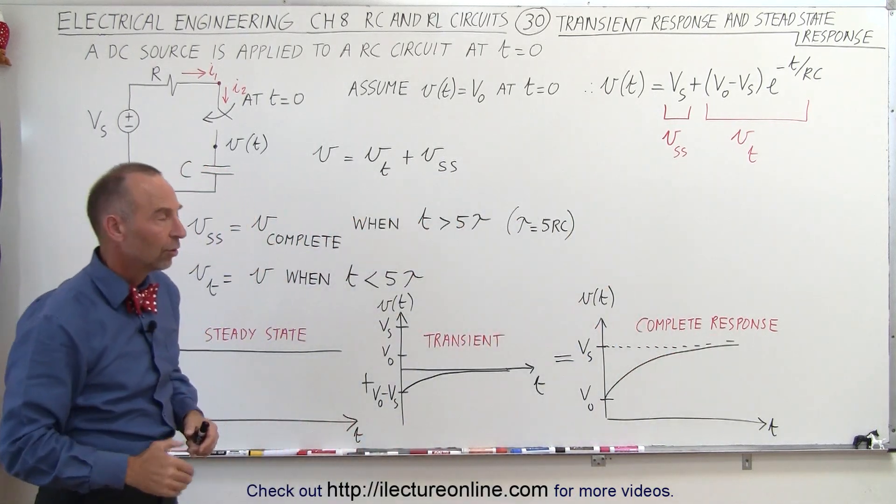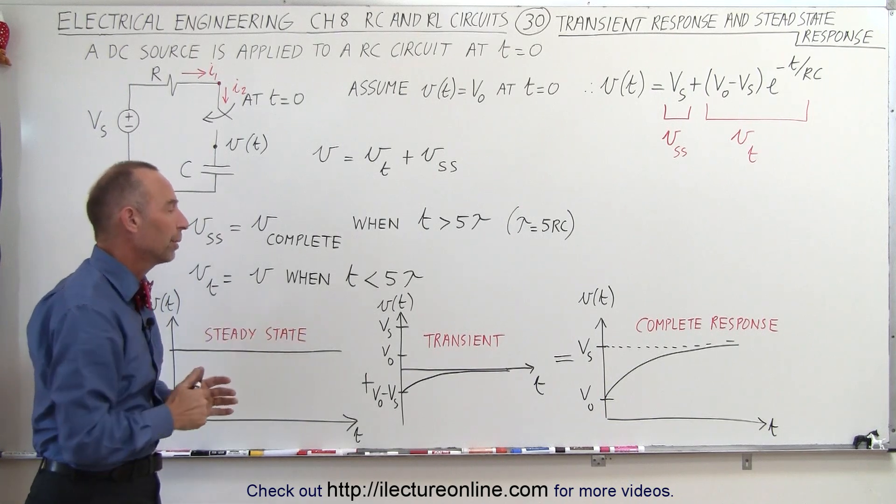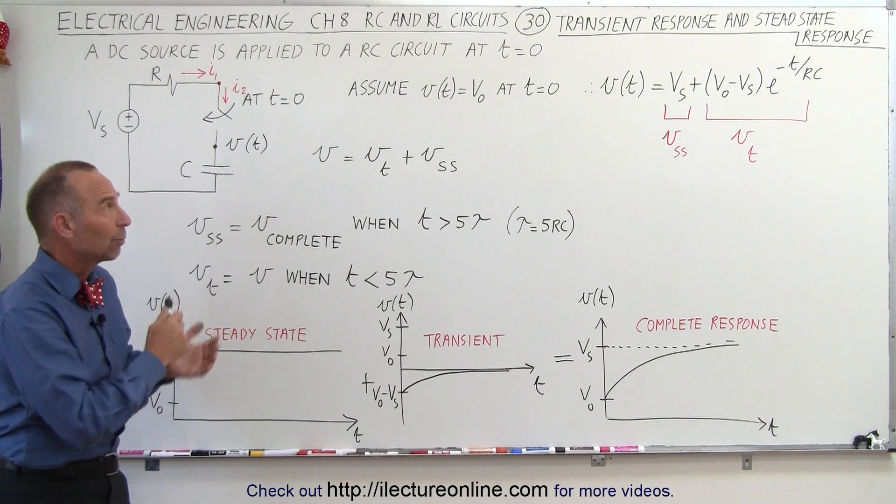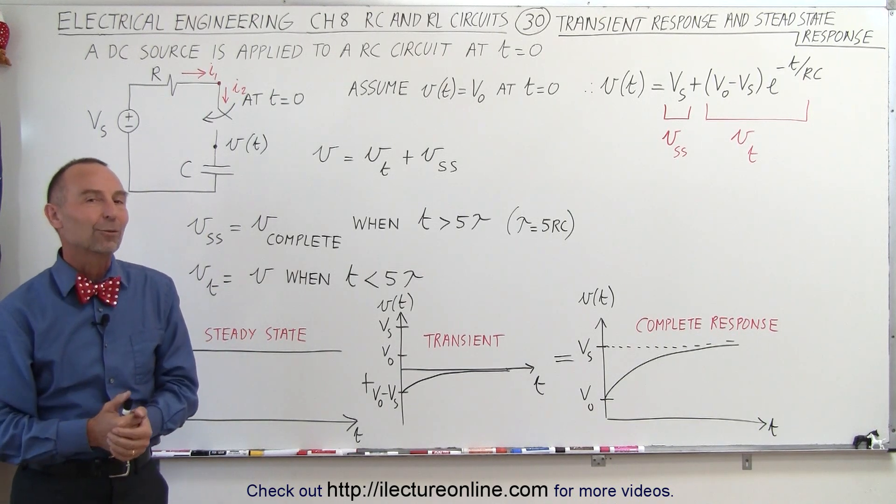So the transient state is only what happens to the circuit over a short period of time, namely, the first five time constants. And that's what we mean by the difference between the transient response and the steady-state response.